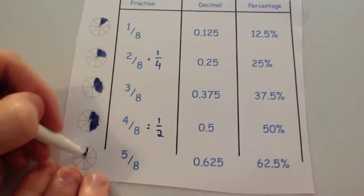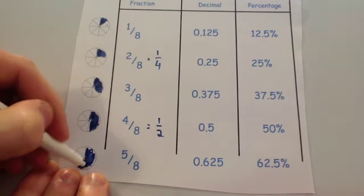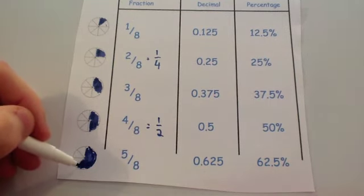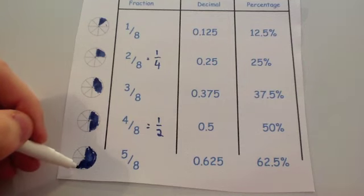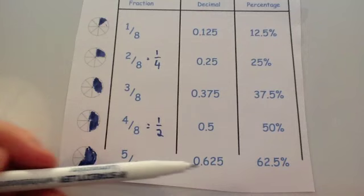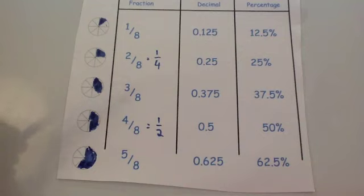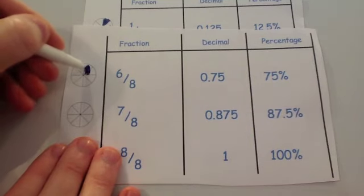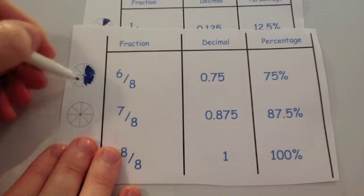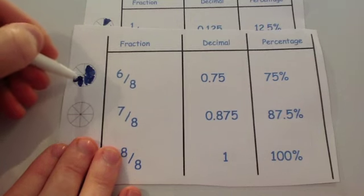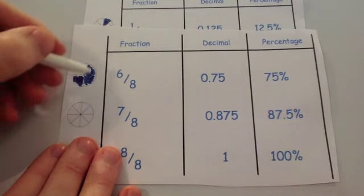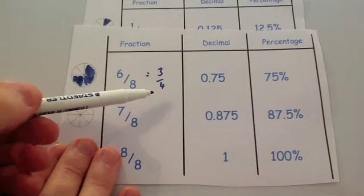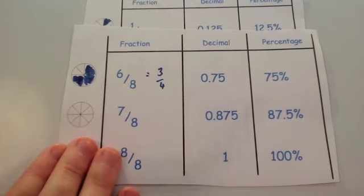Five eighths is five sections: half the shape (50%) plus one more section (12.5%) equals 62.5%, or 0.625. Six eighths is six sections — notice that makes three quarters of the shape. So six eighths equals three quarters: 75% or 0.75.